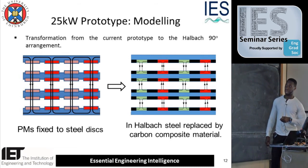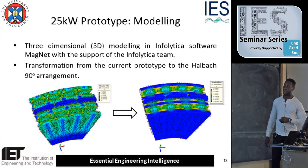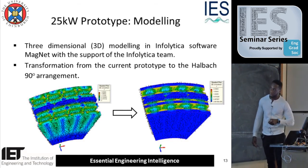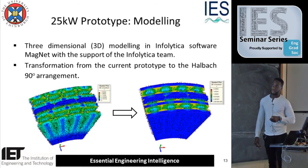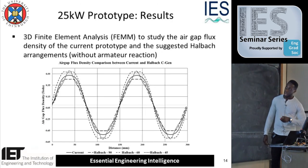I'm also looking at having a Halbach array at the top and the bottom stage, and having it still perform like it would in a standard machine but with exclusion of the back iron or steel. I did some 3D modeling in Politica going from the current prototype to the Halbach array. You can see there's flux passing through the steel back iron in the conventional case. In the Halbach case, I've replaced steel with a material called carbon fiber, and there's little or no flux in that region — meaning there's a possibility for a straight swap between steel and carbon fiber.